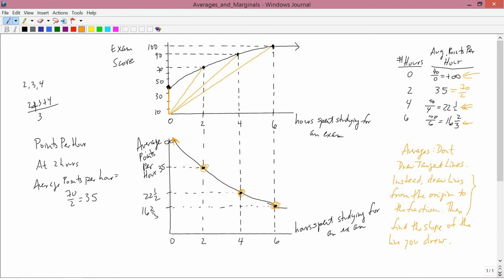Now it turns out there is a way to do this analytically. I'll talk about that briefly, but the main way we want to do it is graphically. So analytically, when you go from zero hours spent studying for an exam to two, the exam score you get goes from 50 to 70. Remember the marginal is delta y over delta x. In other words, it's the change in exam score divided by the change in hours spent studying.